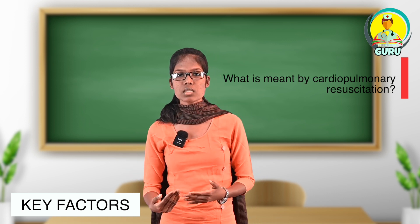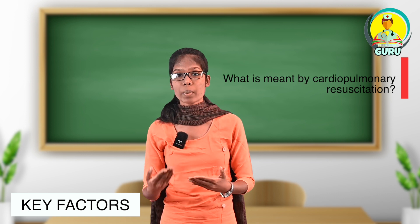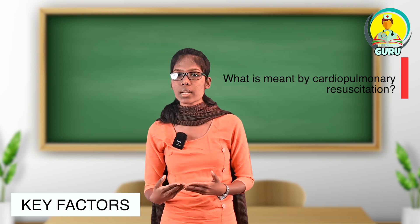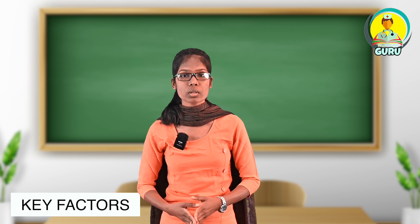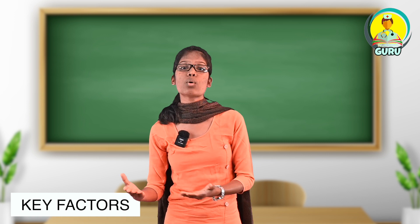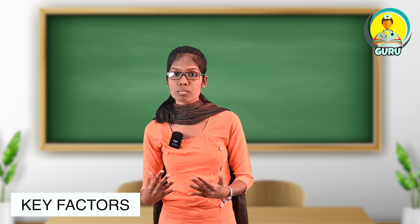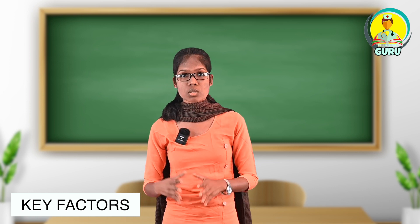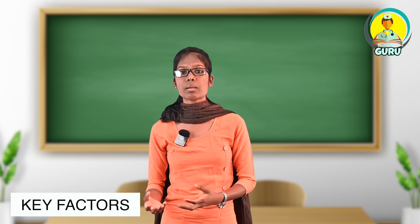When the heart fails to pump or circulate blood, the whole body and vital organs will not receive sufficient oxygen. This is known as anoxia — the absence of oxygen in body cells or tissues. In anoxia, damage to tissues and vital organs can occur.